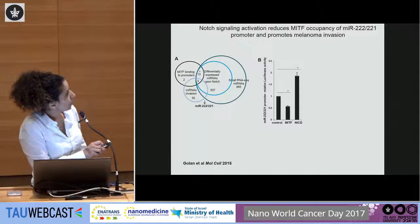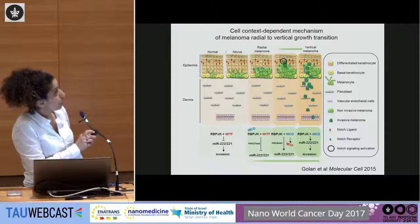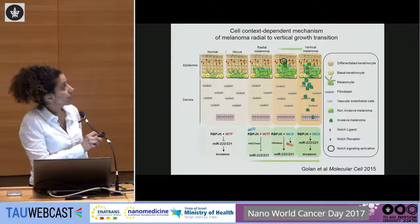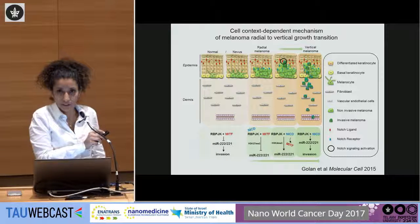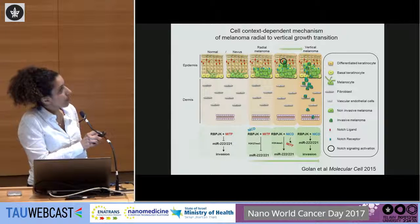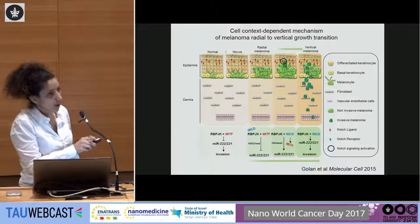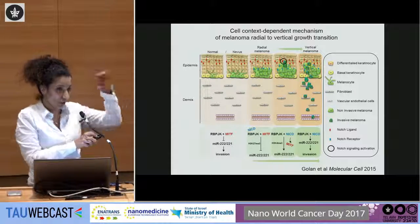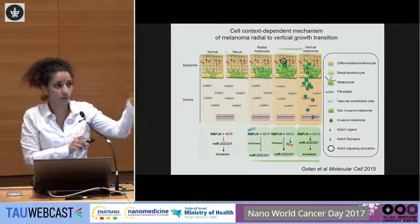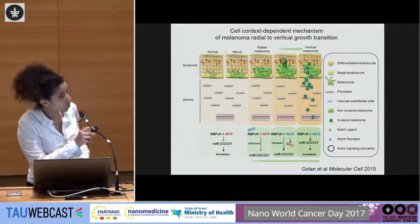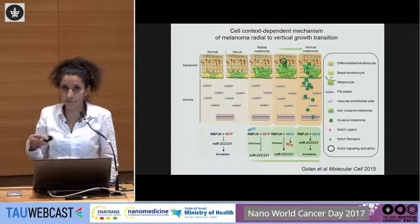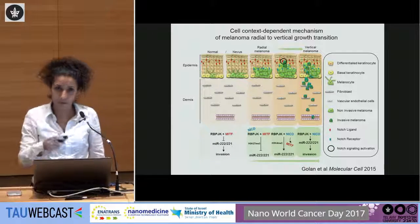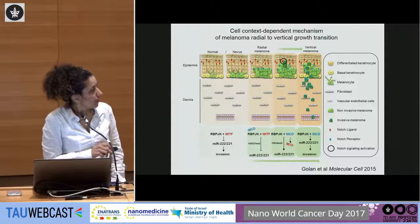Going to the overall model: melanocyte in normal skin, malignant transformation causes cells to expand within the epidermis — the in situ stage. If caught here, that's good news. Then cells go through a transition switch and start growing down to the dermis. This switch occurs because cells were growing upwards until they reached a layer expressing the Notch ligand. We used a drug to block this interaction and had success in blocking this transition into the aggressive stage. The molecular mechanism involving MIR-222/221 was identified, and this paper was published.